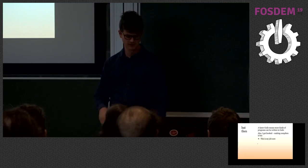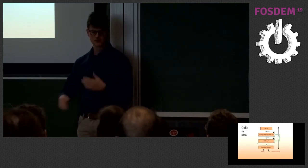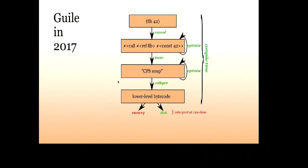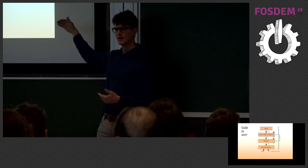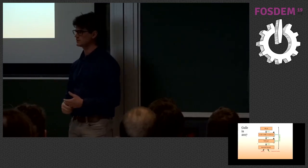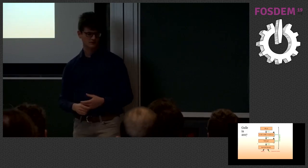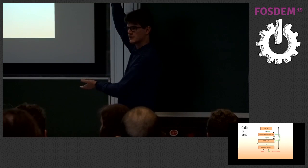A couple of years ago we released GUILE 2.2, which is the one folks are using, especially in Guix. We added one more phase: the primitive Scheme language we used for optimizations wasn't actually a great language for doing optimizations. So we introduced a continuation-passing style intermediate representation called CPS soup — similar to SSA for those familiar with compilers. We still bottom out in bytecode, but it's a lower-level bytecode than in GUILE 2.0. The tower is getting taller.